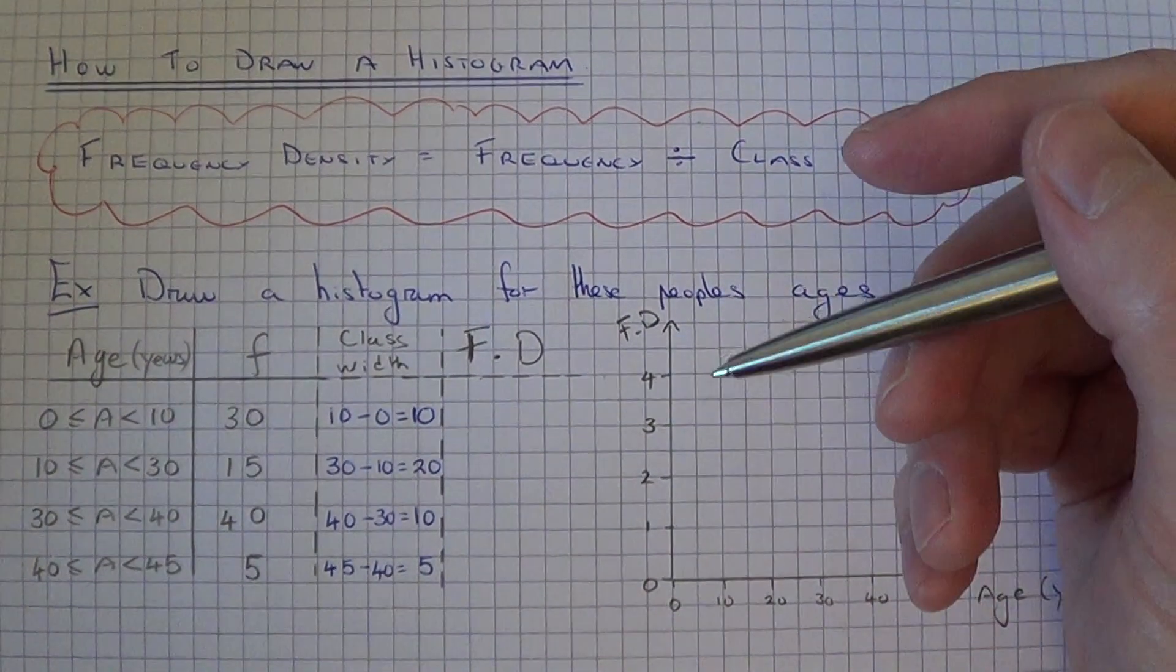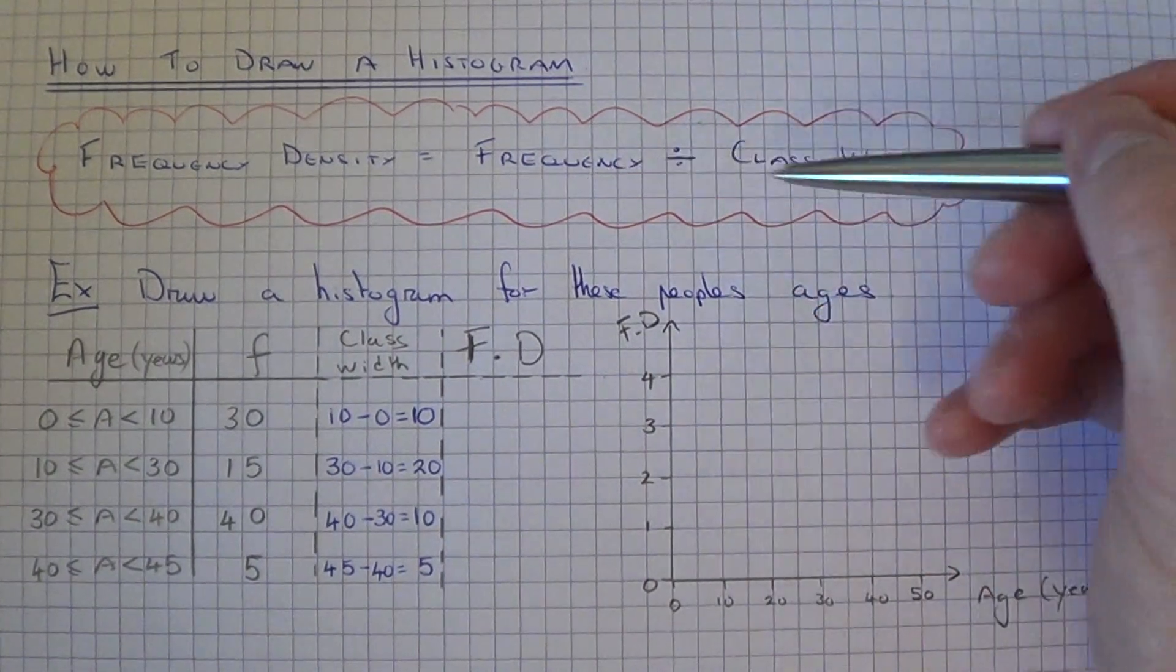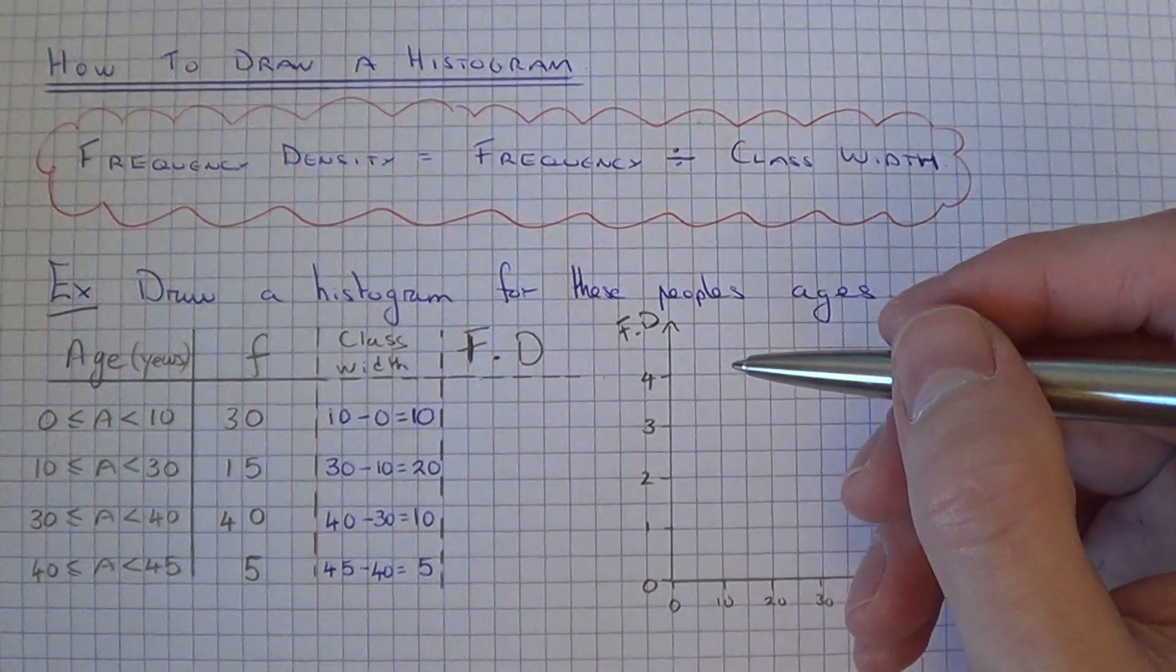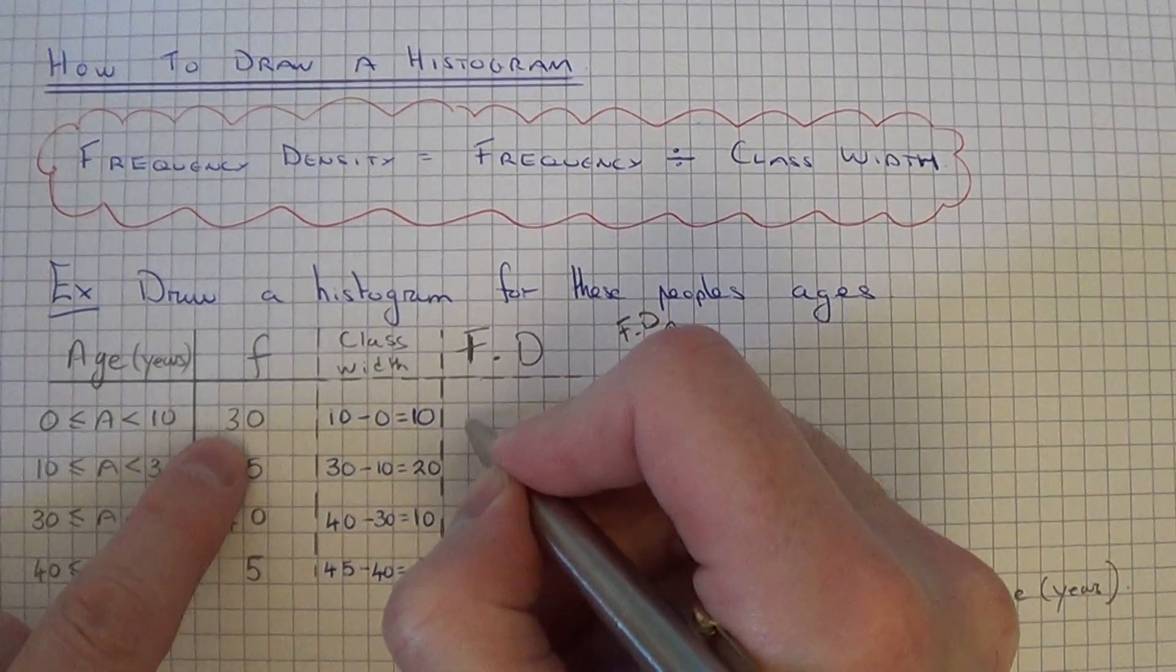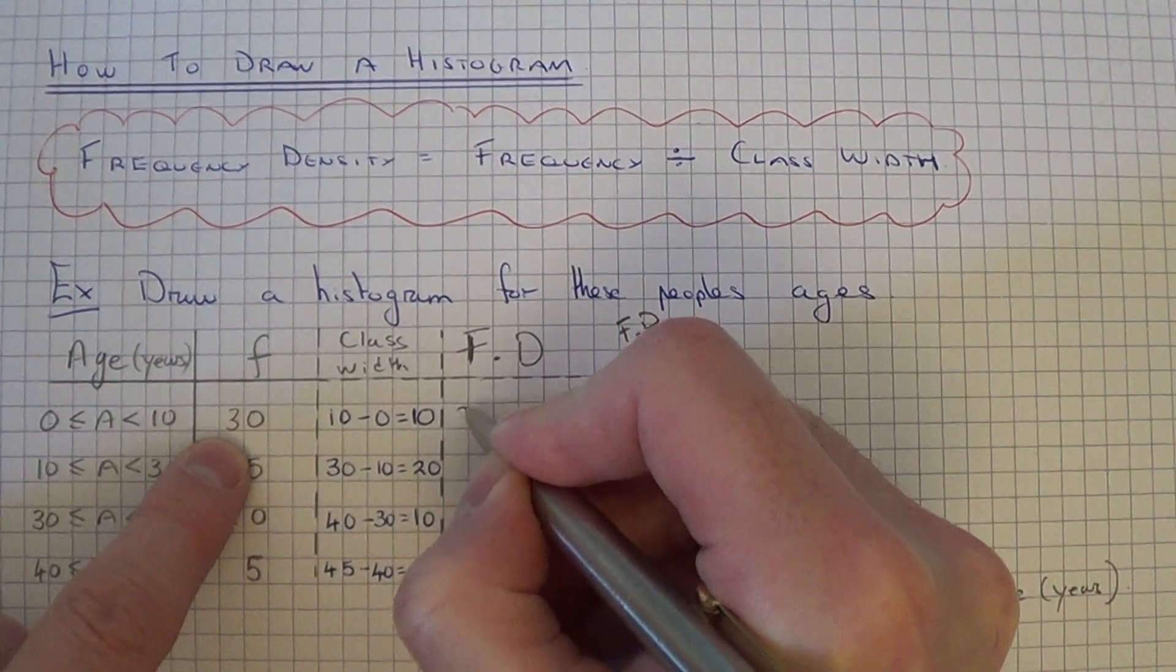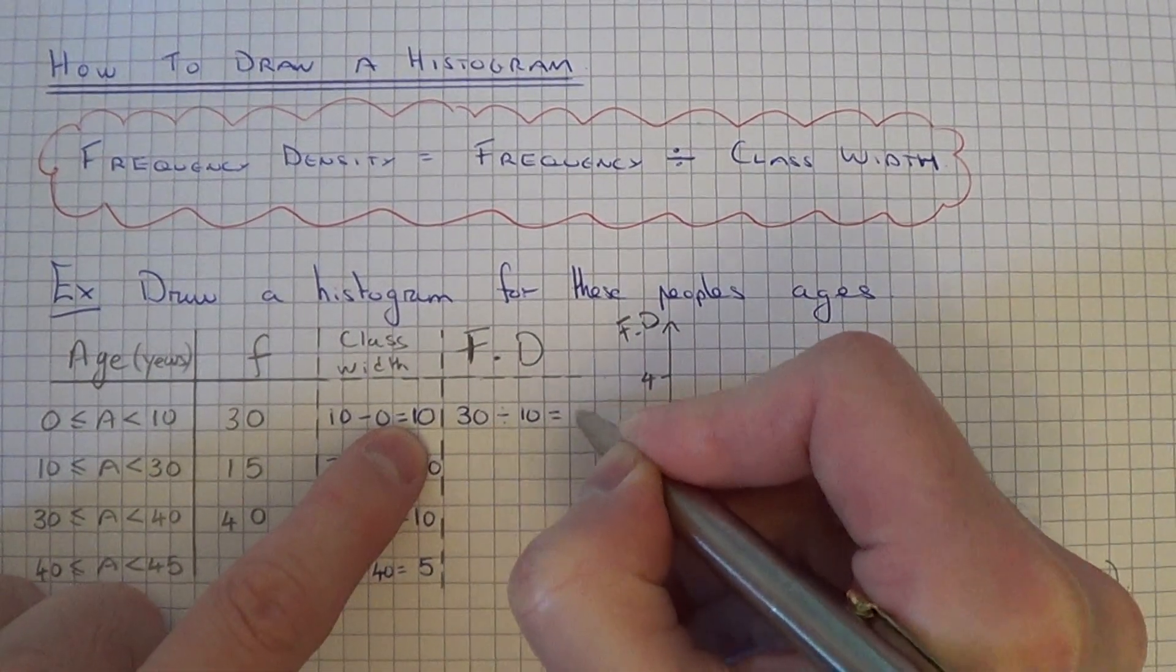So once we've got these class widths, we can then work out the frequency density using the formula above. So it's the frequency divided by the class width. So for the first group, it will be 30 divided by 10, which is 3.